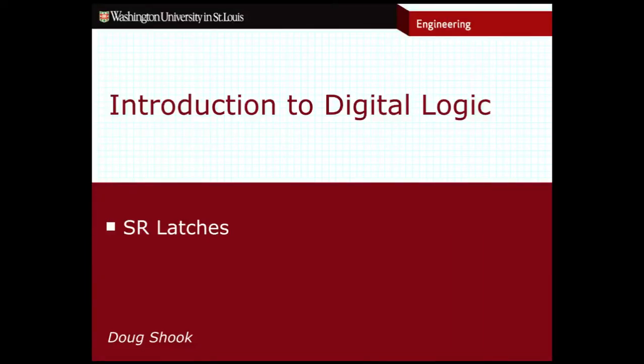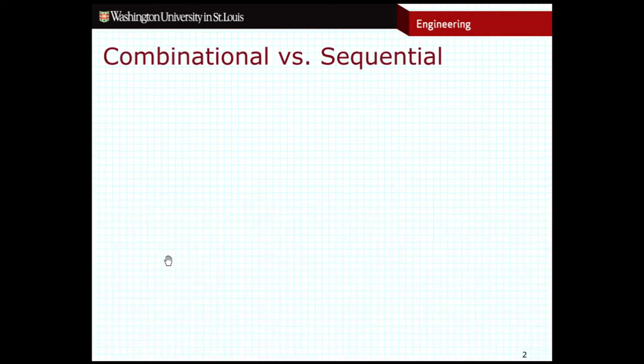So everything we've done in the first part of the course has been combinational logic, which means that the outputs of our circuits have only depended on the inputs of our circuits. And so in this section, we're actually going to start to deal with more sequential logic.